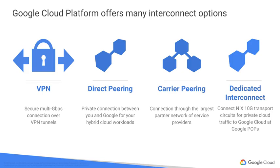But some customers don't want to use the internet, either because of security concerns or because they need more reliable bandwidth. They can consider peering with Google using direct peering — putting a router in the same public data center as a Google point of presence and exchanging traffic. Google has more than a hundred points of presence around the world. Customers who aren't already in a point of presence can contract with a partner in the carrier peering program. One downside of peering, though, is that it isn't covered by a Google service level agreement.